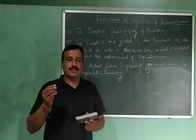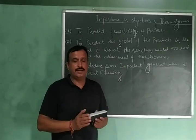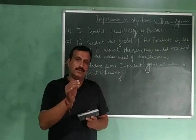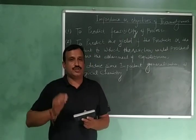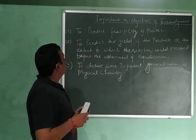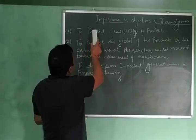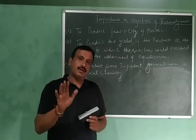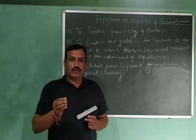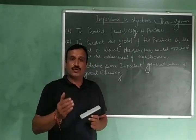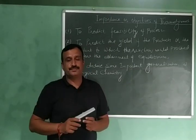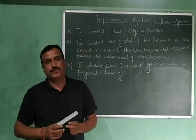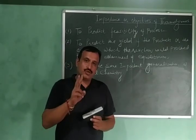Many concepts of physics like light, heat, electric field, and magnetic field are explained on the basis of thermodynamics. But here we are studying chemistry, so we will focus on the objectives of thermodynamics in chemistry only. The first objective is to predict the feasibility of a process — it helps us in predicting the feasibility of a chemical as well as a physical process. I want to recapitulate two things: first, what is a spontaneous or feasible process, and second, the correlation between energy and stability.